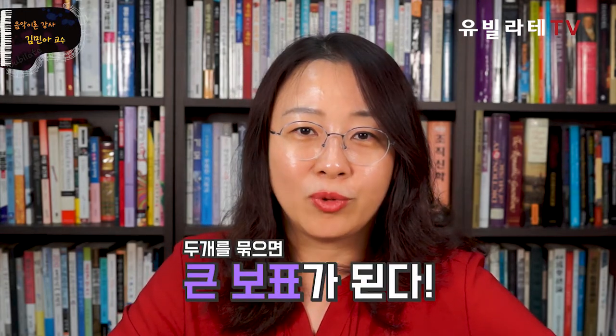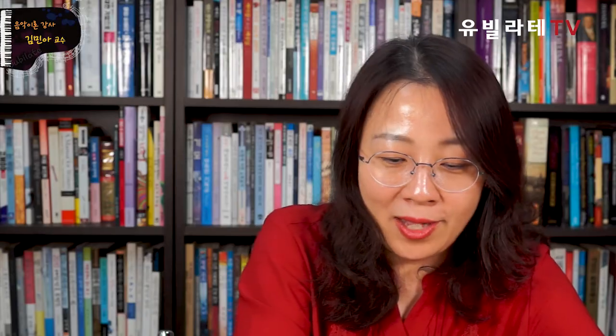높은 음자리표, 낮은 음자리표가 따로 있을 때는 우리가 작은 보표라고 이야기를 하지만, 두 개를 묶어 주었을 때는 큰 보표가 되죠. 그럴 때 공통의 자리가 있는데, 덧줄 하나의 자리가 가온 C음이라고 말씀을 드렸어요. C4의 음을 공통적으로 갖고 있으니까, 어려우신 분은 덧줄 하나부터 해서 세어 나가시면 될 것 같아요.